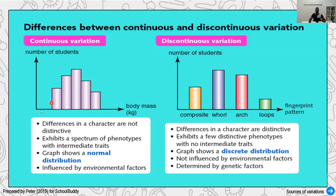Continuous variation involves characters that can't be made distinct. The easiest example is body mass — a person does not have a single certain value; one person can be 50 kg, another maybe 70, and so on. If we put these into a graph, they show a normal distribution. Usually these characteristics are influenced by the environment — for example, a person having high weight because they are eating more food. So lifestyle and environment influence continuous variation.